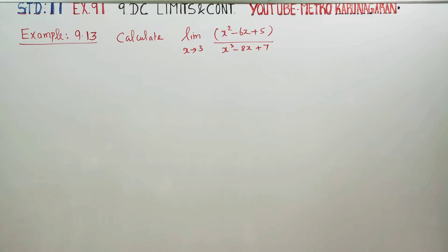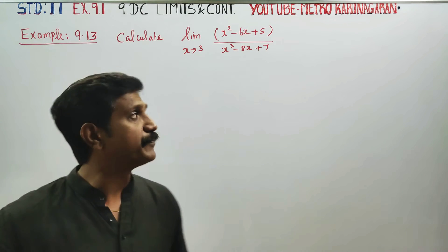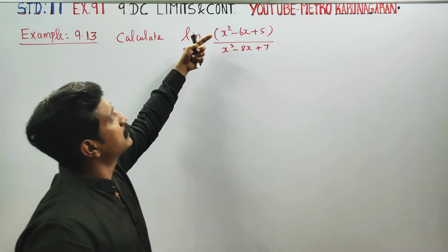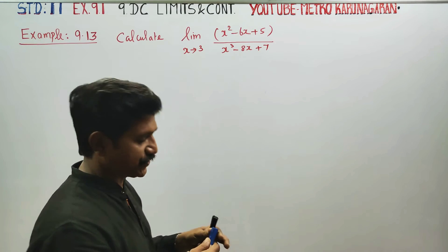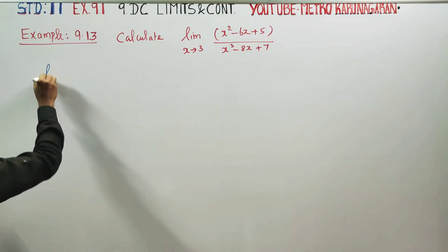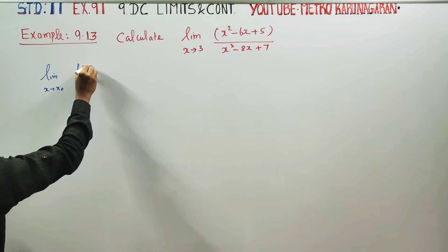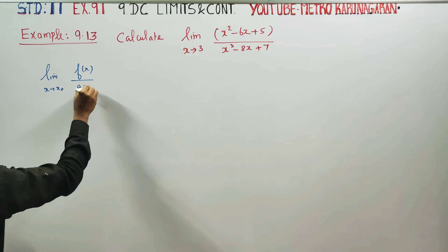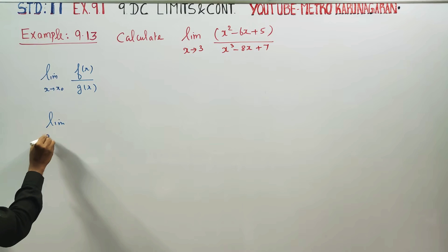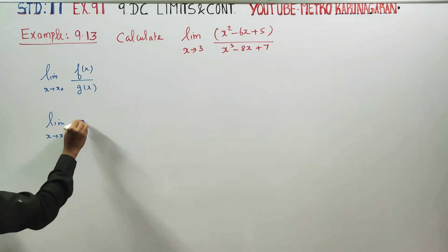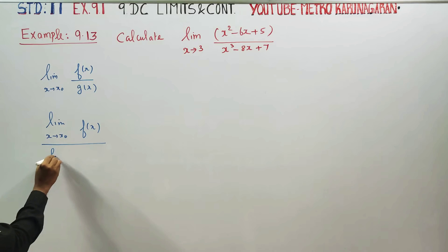Hello 11th standard students. In example 9.13, we calculate the limit as x approaches 3 of a function divided by a function. The limit as x approaches a of f(x) divided by g(x) equals the limit of f(x) divided by the limit of g(x), but there's a condition.